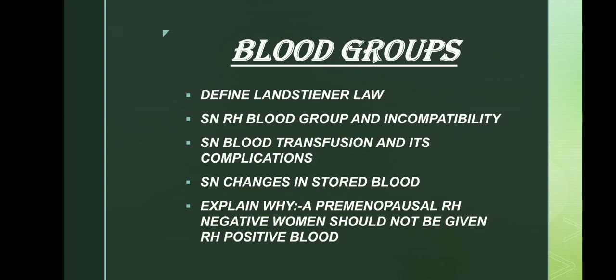The next chapter is blood groups, which is an important chapter and usually has a lot of questions asked. Important questions include: define Landsteiner's law; Rh blood group and incompatibility; blood transfusion and its complications. Changes in stored blood is not that important. Explain why a pre-menopausal Rh-negative woman should not be given Rh-positive blood is also important.